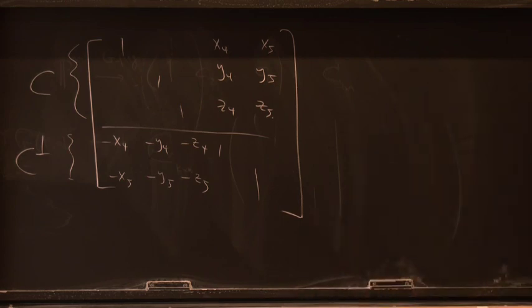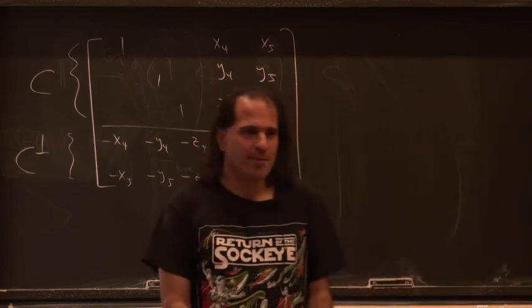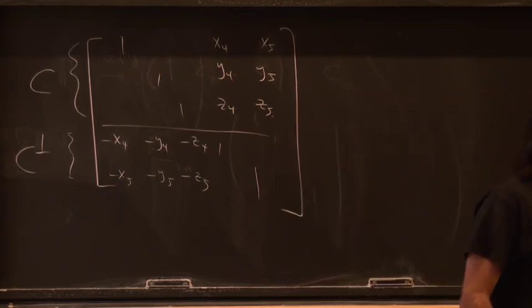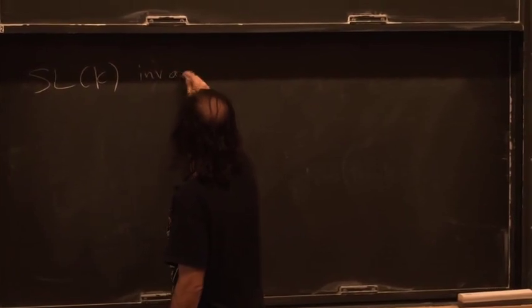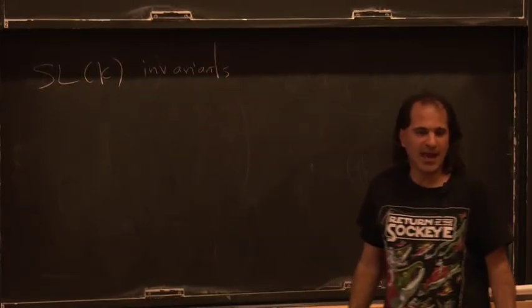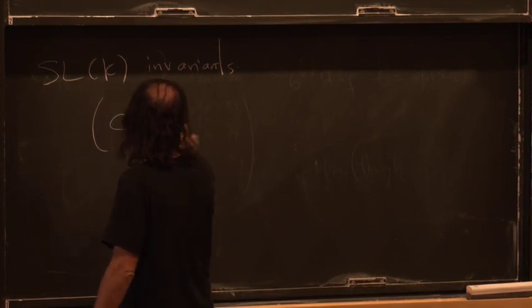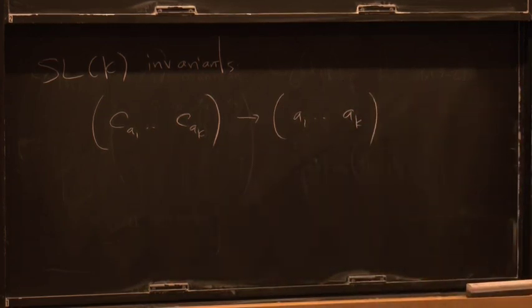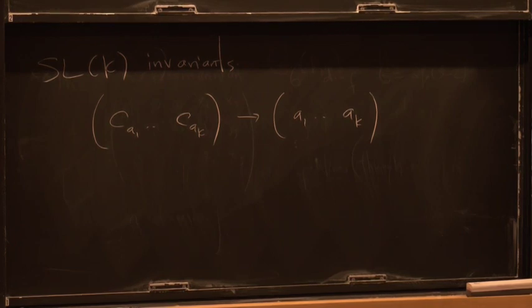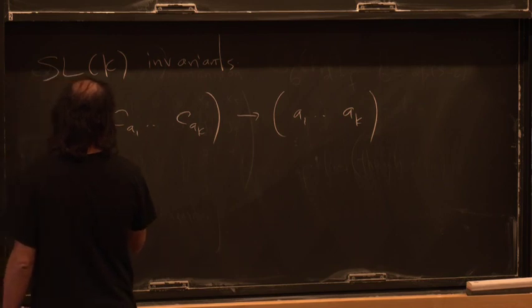Now comes the more interesting question: what objects can we talk about? If someone hands you a k-by-n matrix, anything you do should be GL(k) invariant. The SL(k) invariants are just: take any k columns of this matrix and take the determinant. Those are our minors, written as C(A1...Ak) or just labeled by indices. The GL(k) invariants are then ratios of minors.